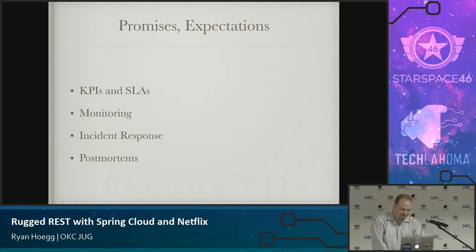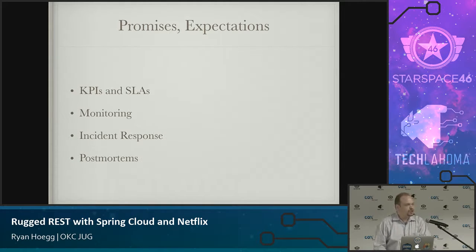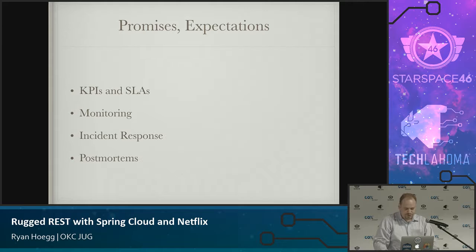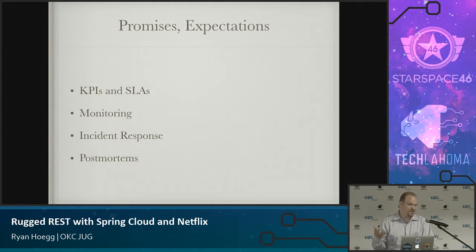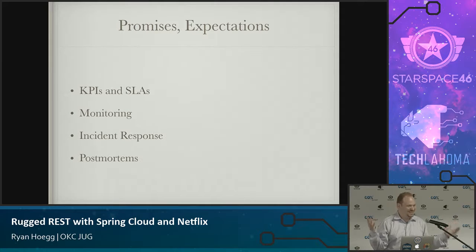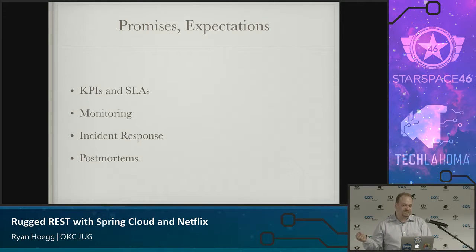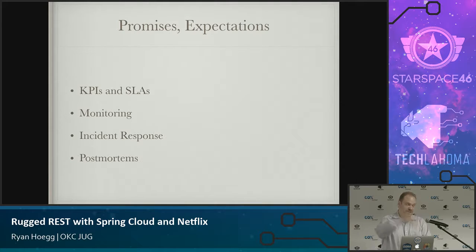When Equifax messed up, they had a bad incident response system. And finally, postmortems. A guy named John Alspaugh promotes the idea of blameless postmortems, because otherwise you never actually find out what happened — as soon as somebody says 'I did it,' you stop learning. Blameless postmortems need us to actually forgive and have people feel safe to say what actually happened, because it's almost never an individual's fault anyway. It's your system's fault. That's why we do postmortems — to discover what was wrong with the way we do things so that something bad doesn't happen again.